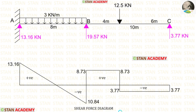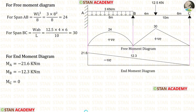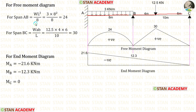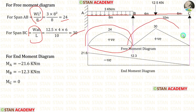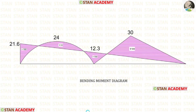Now let us make the shear force diagram. Now we are going to draw the bending moment diagram. Before drawing the bending moment diagram, let us make the free moment diagram and the end moment diagram. For the free moment diagram, we consider every span as a separate simply supported beam and use the formulas to find the moments, making two diagrams. Then using the end moments, we make the end moment diagram. Combining the free moment diagram and the end moment diagram gives us the final bending moment diagram. Thank you for watching this video.